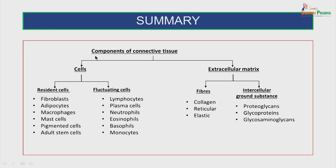To summarize, the components of the connective tissue include cells and the extracellular matrix. The cells are divided into two populations: the resident cell population and the fluctuating cell population. The resident cell population includes the fibroblasts, adipocytes, macrophages, mast cells, pigmented cells and adult stem cells. The fluctuating cell population includes lymphocytes, plasma cells, neutrophils, eosinophils, basophils and monocytes.